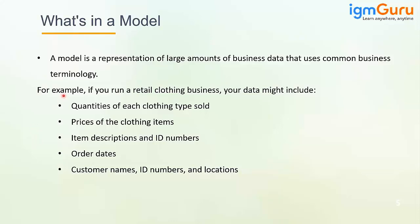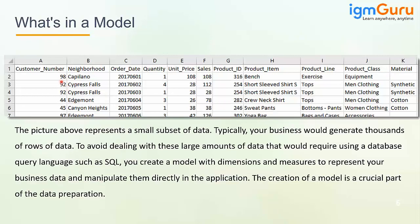For a retail business, data types like IDs, location, etc. are typically present. The picture above represents a small subset of data — typically your business would generate thousands of rows. To avoid dealing with large amounts of data requiring database query languages such as SQL, you can create a model within SAC with dimensions and measures to represent your business data and manipulate it directly in the application.